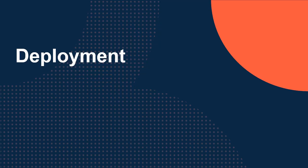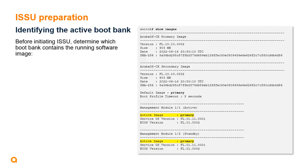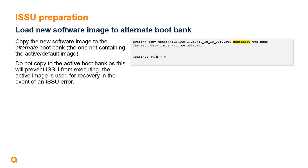Now that we understand how ISSU works, let's look at how to use it to upgrade the software on a running 6400 chassis. The first step is to identify which running software version is contained in the active boot bank using the show images command, looking for the active image displayed for both the active and standby management modules. Once you've determined the active boot bank, load the new software image in the alternate boot bank. If the active boot bank is primary, copy the new software image into the secondary boot bank using the copy command, web UI, or any other method. Do not copy the new image to the active boot bank, as this will prevent ISSU from executing — the active image is used for recovery in case ISSU fails.